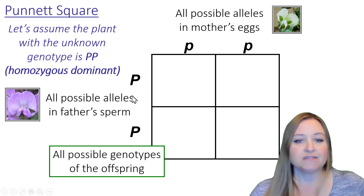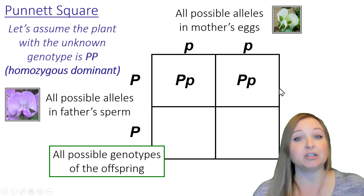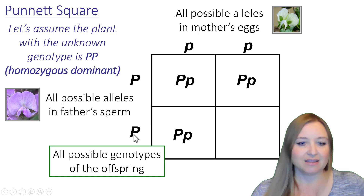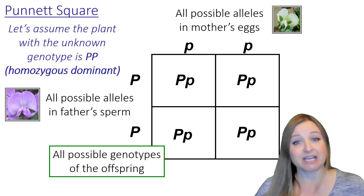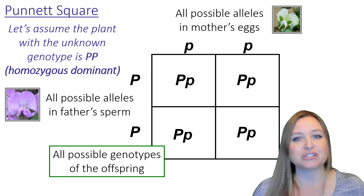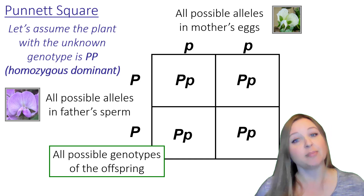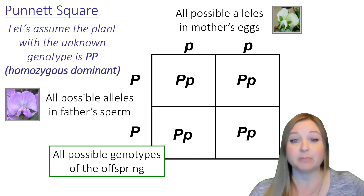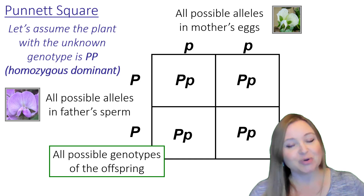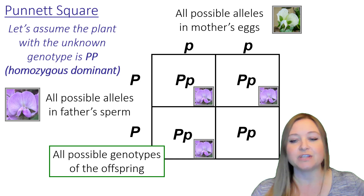Filling in the Punnett square: every combination gives us big P, little p. All four offspring genotypes are heterozygous. Since the dominant purple allele masks the recessive white allele, all offspring would show the purple phenotype. So in scenario one, if the father is homozygous dominant, we expect all offspring to have purple flowers.